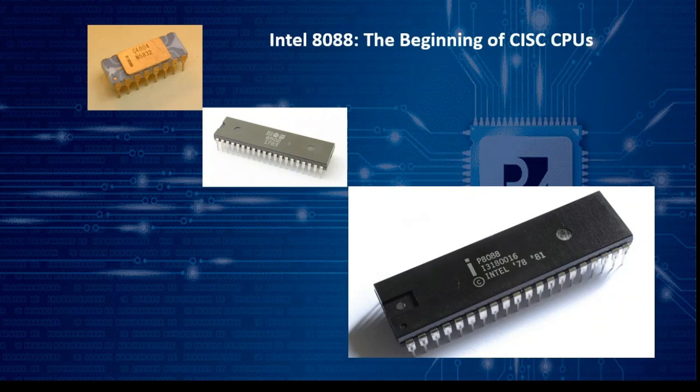As the personal computer market grew, so did the complexity of CPUs. IBM's choice of the Intel 8088 for its PC started a trend of adding more features, creating powerful chips capable of handling 32-bit and later 64-bit operations. These complex instruction set computers, or CISC, aimed to be mainframes on a desktop.